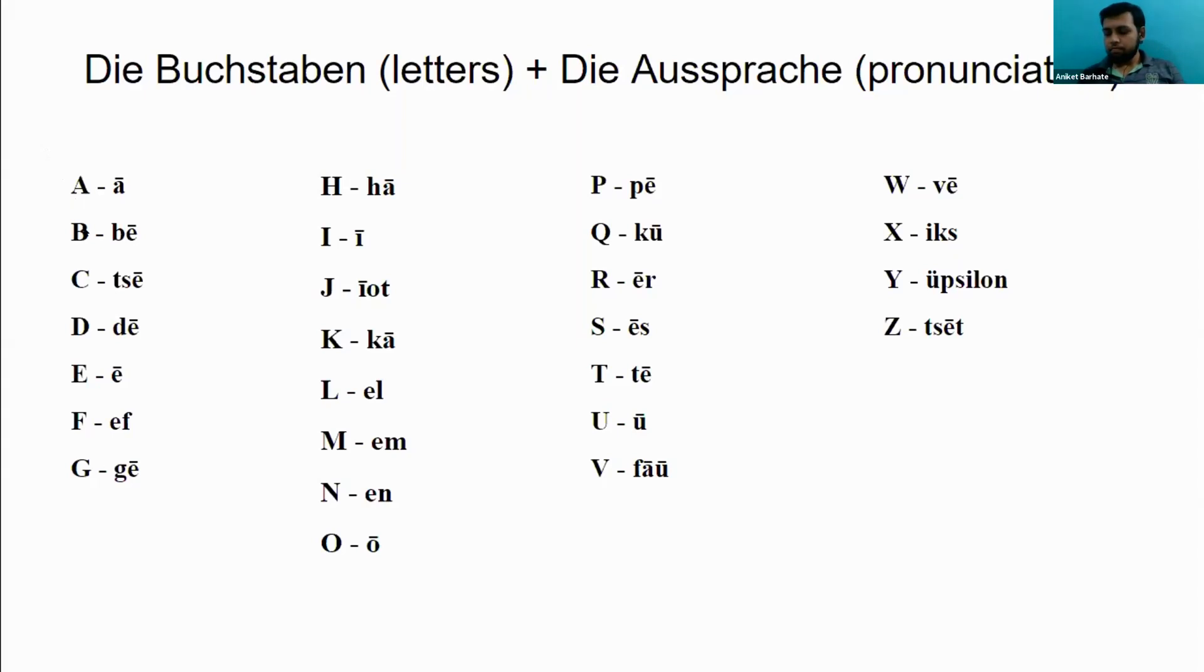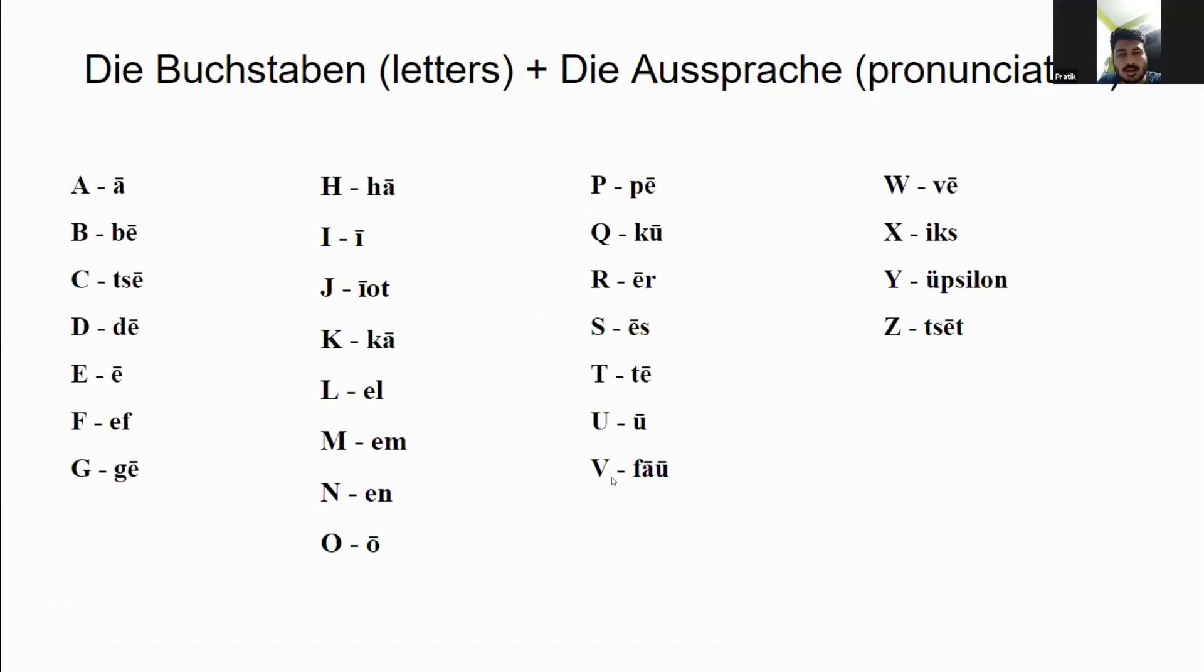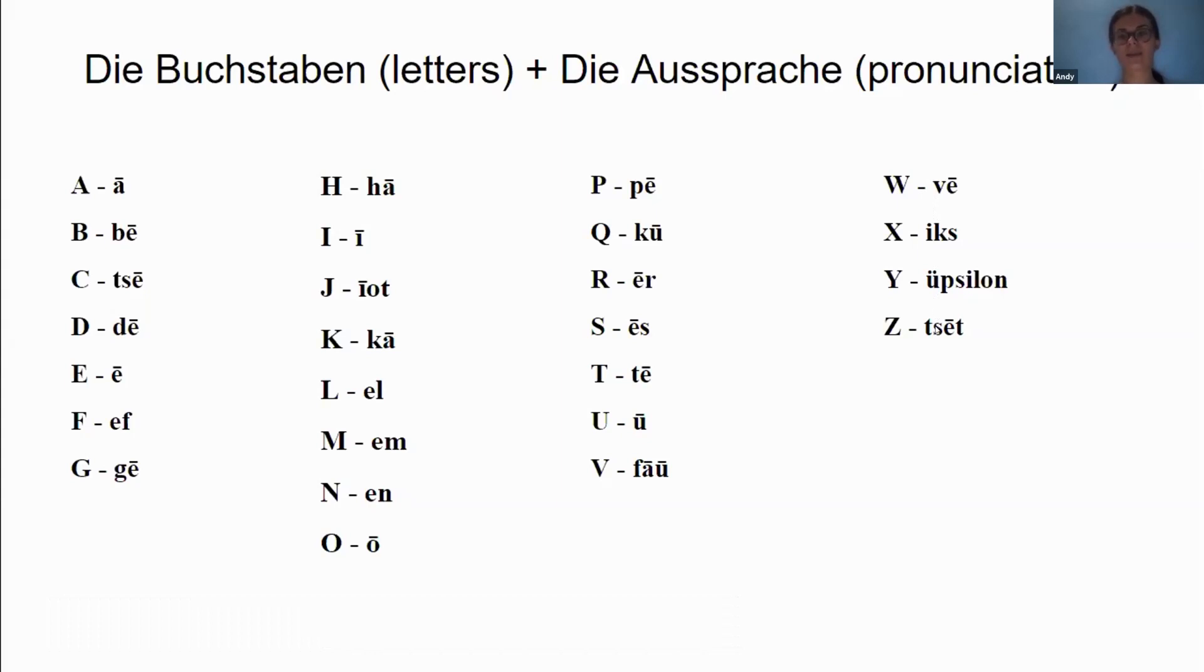I'll just read the alphabet once so that you'll get an idea of how the letters sound and then we'll just take them step by step. Okay. So the German alphabet sounds like this. A, B, C, D, E, F, G, H, I, J, K, L, M, N, O, P, Q, R, S, T, U, V, W, X, Y, Z.